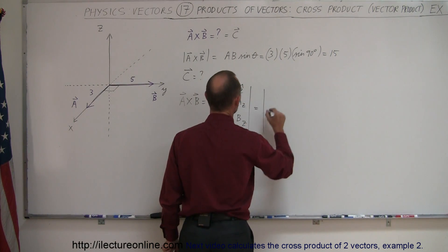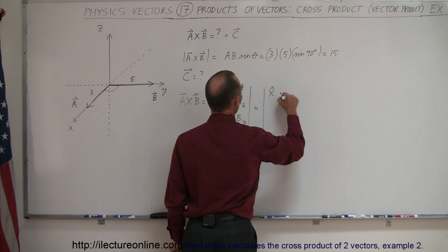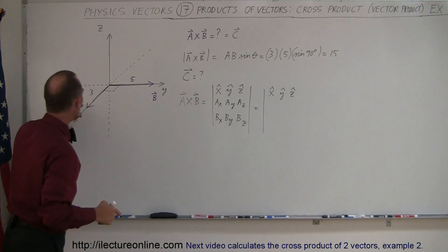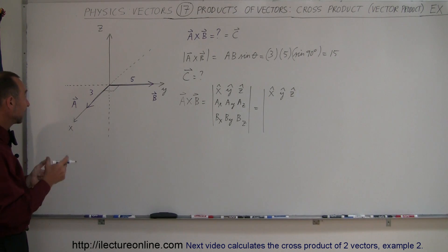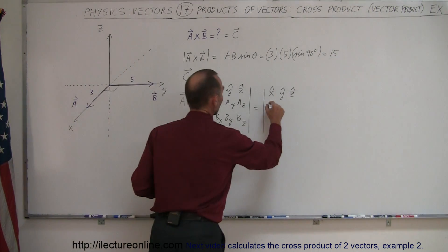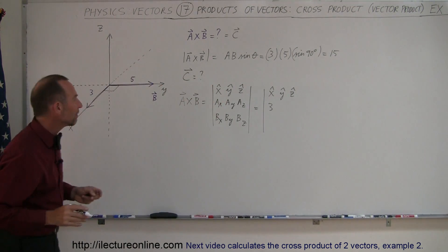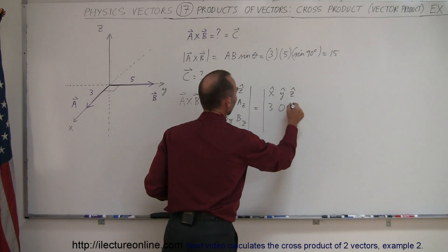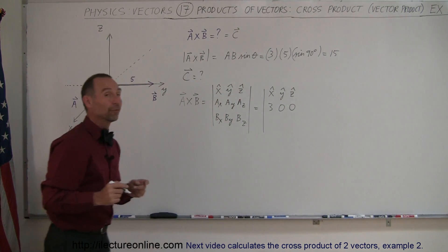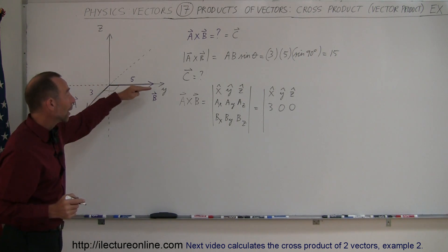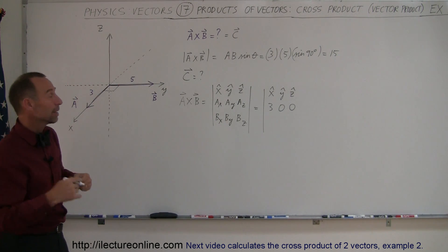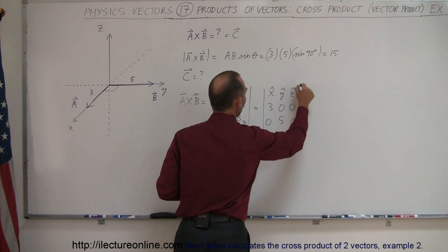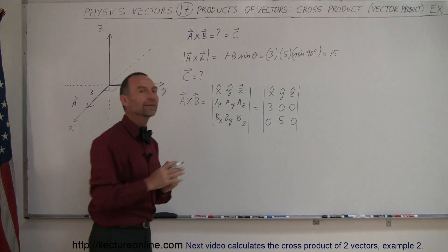Plugging in the numbers: vector A points only in the x direction with magnitude 3, so a_x = 3, a_y = 0, a_z = 0. Vector B points only in the y direction with magnitude 5, so b_x = 0, b_y = 5, b_z = 0. Now we work out this determinant.